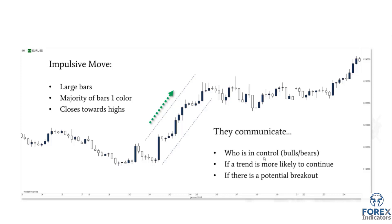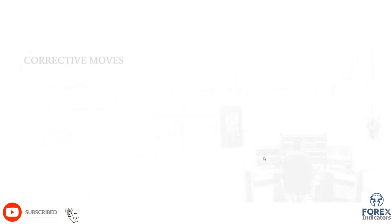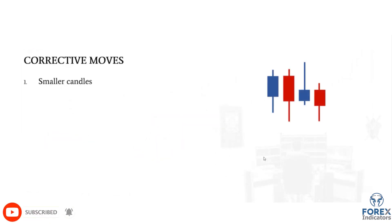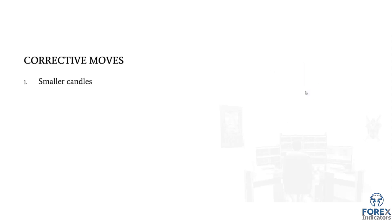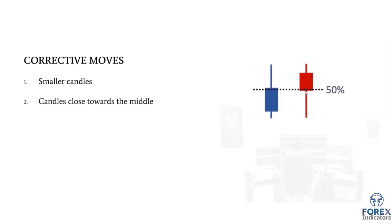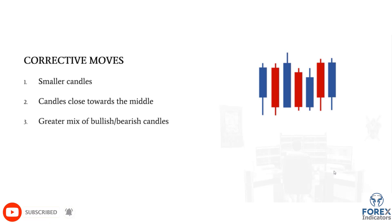An impulsive move communicates who is in control, whether a trend is likely to continue, or if a potential breakout is coming. Corrective moves are the inverse of impulsive moves — instead of large candles, they're smaller; instead of closes towards the highs or lows, they close towards the middle; and instead of one consistent color, there's a mix of bullish and bearish candles. Think of corrective moves as the opposite of impulsive moves — both visually and from an order flow perspective.